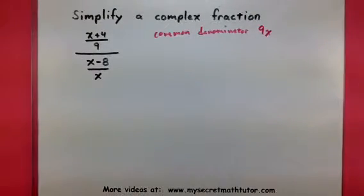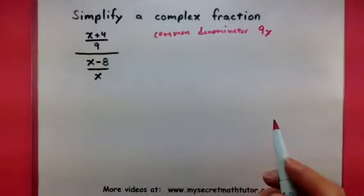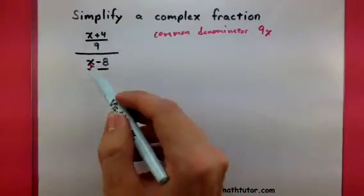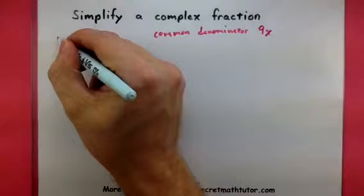Now, what we do with this common denominator is where all the magic happens. We're going to multiply the top of the large fraction by 9x and the bottom of the large fraction by 9x.